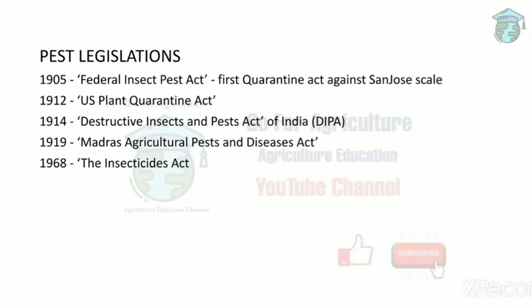Regarding pest legislation, the major acts passed were: the 1905 Federal Insect Pest Act — the first quarantine act against San Jose scale; the 1912 US Plant Quarantine Act; the 1914 Destructive Insects and Pest Act of India; the 1919 Madras Agricultural Pest and Disease Act; and the 1968 Insecticides Act. The main objective of all these acts was to prevent the introduction of foreign pests into the country.